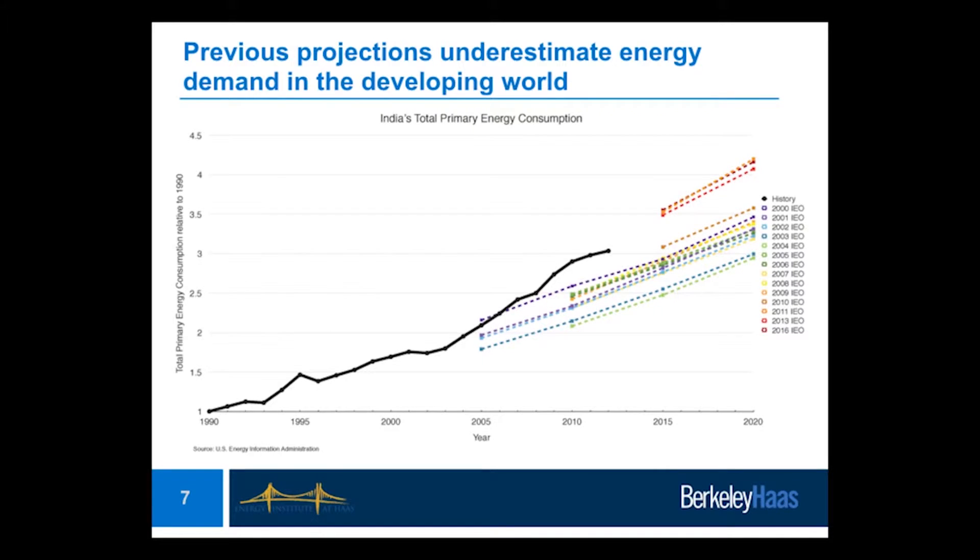You might think that's just a China story — China had rapid GDP growth. But similar patterns emerge in India: the black line of actual consumption is above the colored projection lines, and projections keep getting updated once passed a couple of years early. A similar graph for Sub-Saharan Africa shows the same story. So that 85% projection for the developing world could well be an underestimate.